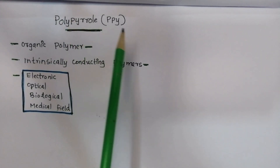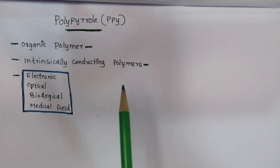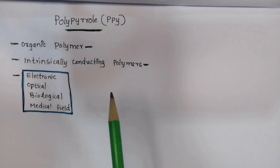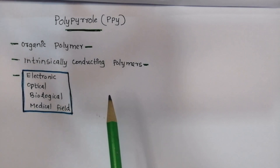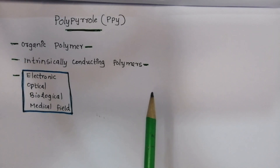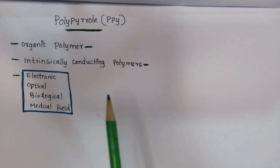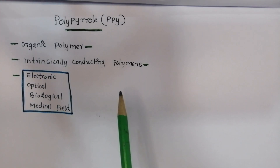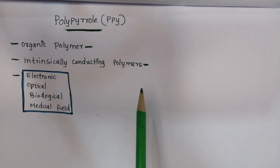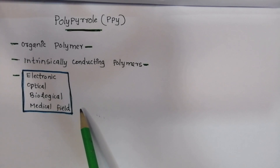Next, we are learning polypyrrole — the same conducting polymers. We are talking about organic polymers as well. This is an example of intrinsically conducting polymers. We have already done a class of conducting polymers, and now we are using polypyrrole.